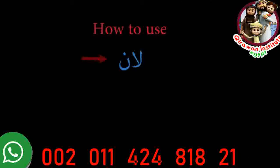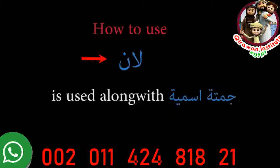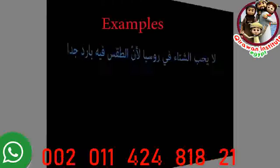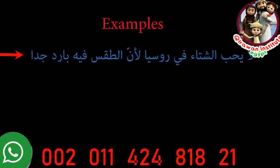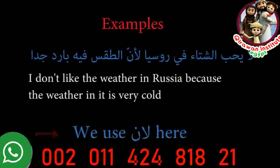Now let's look at how we use liena. Liena is used to give an explanation that requires a full sentence. We use liena plus jumla ismiya, so liena is always followed by a full sentence. For example: 'I don't like the weather in Russia because the weather in it is very cold.' This full sentence following liena is what requires its use.